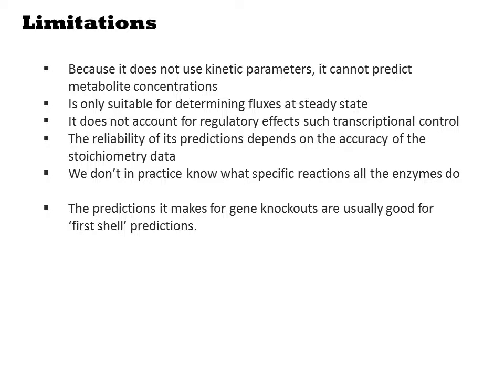The predictions it makes for gene knockouts are usually good for first shell predictions. By this, I mean enzymes that immediately divert flux from one of your intermediates. Suppose you have the sequence A to B to C, and there was an enzyme that converted B to Y. FBA can show you these situations and predict that knocking out the B to Y enzyme will increase flux to C.